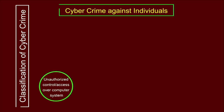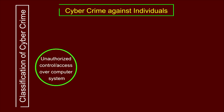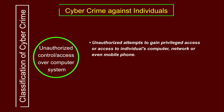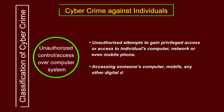The next category is unauthorized control or access over a computer system. This means an unauthorized attempt to gain privileged access to an individual's computer, network, or even mobile phone. If you access someone's computer, mobile phone, or any digital gadget without consent, it comes under cybercrime, as it is considered unauthorized access or control of a digital device.